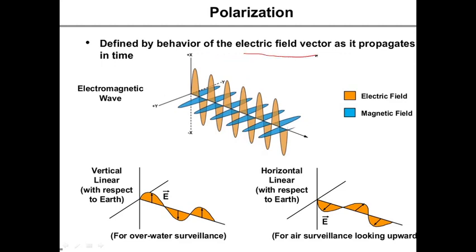Polarization can also be defined as the behavior of the electric field vector as it propagates in time. We know that antennas involve time-varying field components, so polarization is also linked with time. That means for each and every time period, we should observe how the orientation or direction of the waveform is changing — and based on that, many antenna parameters are linked, which you can understand by the end of this video.